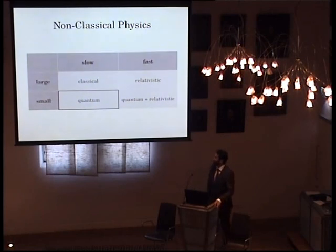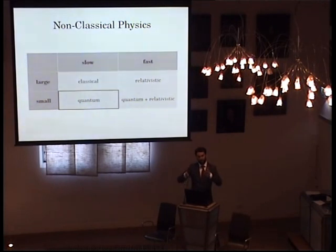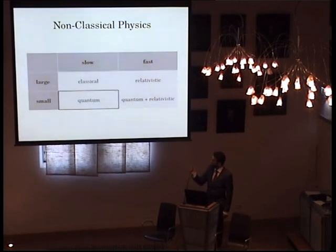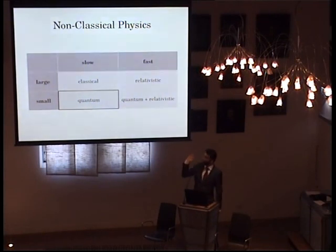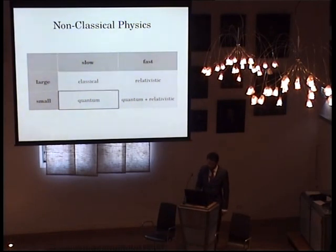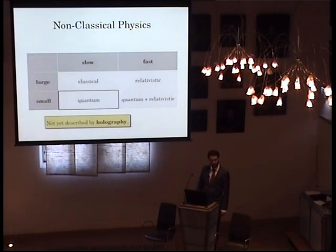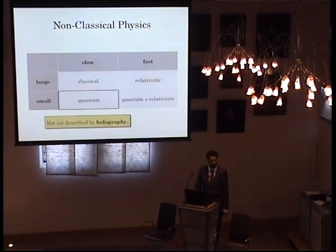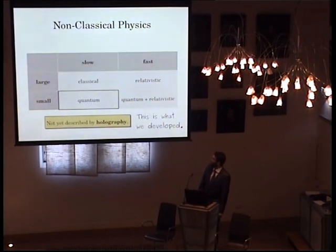Then the question you might want to ask is: if we're talking about something with very small particles, like a material that has electrons running around in it — we're talking about very small objects, namely these electrons — but they can move around in a way that is very slow, so the relativistic effects don't enter. So we're on that side, but still in the quantum bit. And these ones are actually not yet described by holography before. And this is what myself and Marco developed.